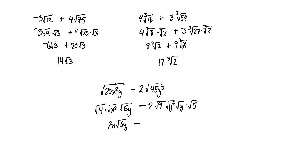For the second term: 2 times 3 is 6 and root y² is y, giving 6y root 5y. Both terms share root 5y as the like radical, so we can combine them: 2x minus 6y, all times root 5y. To highlight: I identified perfect squares — the 4 and x² in the first term, and the 9 and y² in the y³ of the second term.